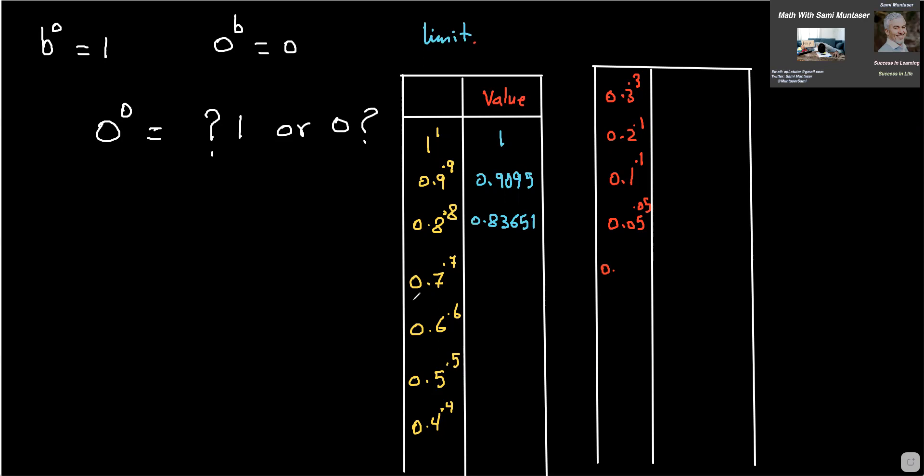So now we just continue and we go 0.8 to the power of 0.8 equals and we get 0.83651. Now let's try 0.7 to the power of 0.7. That's going to give us 0.77906. Now, as you see here, the numbers seem to be decreasing.